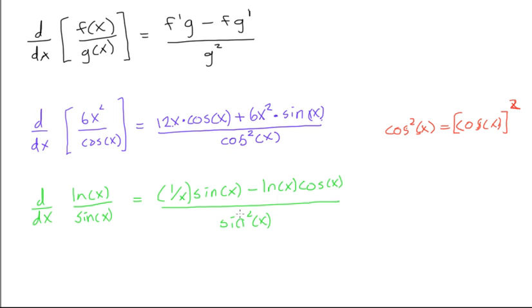Same with sine of x, sine squared x is equal to, I'll write it down. Sin squared x is equal to sin x all squared. It's not equal to sine of x squared. So just make sure you know that.